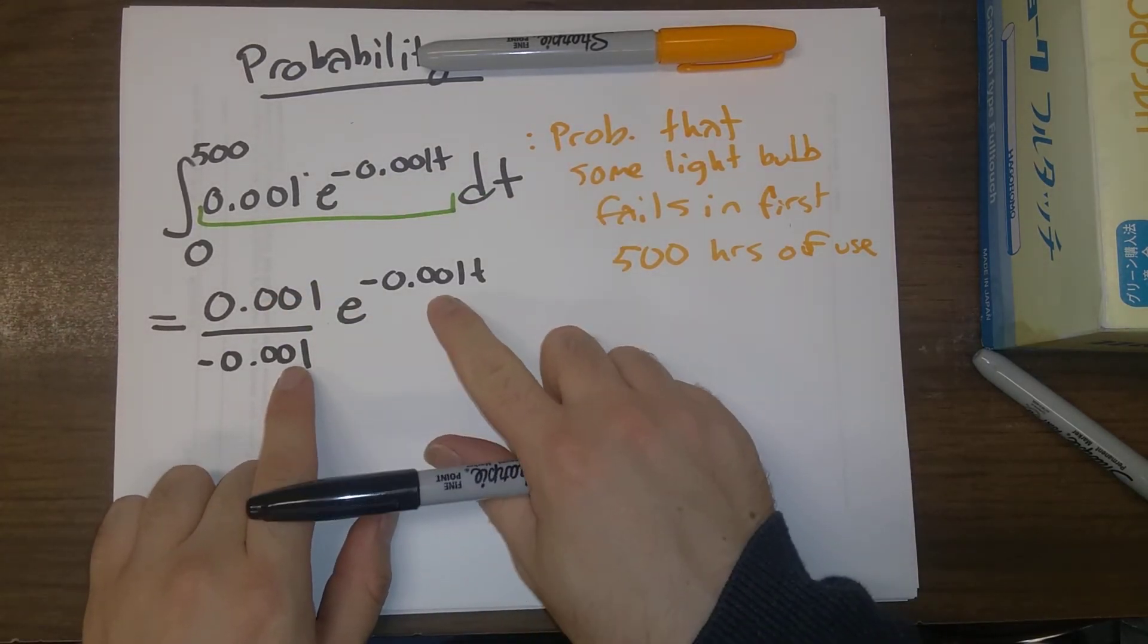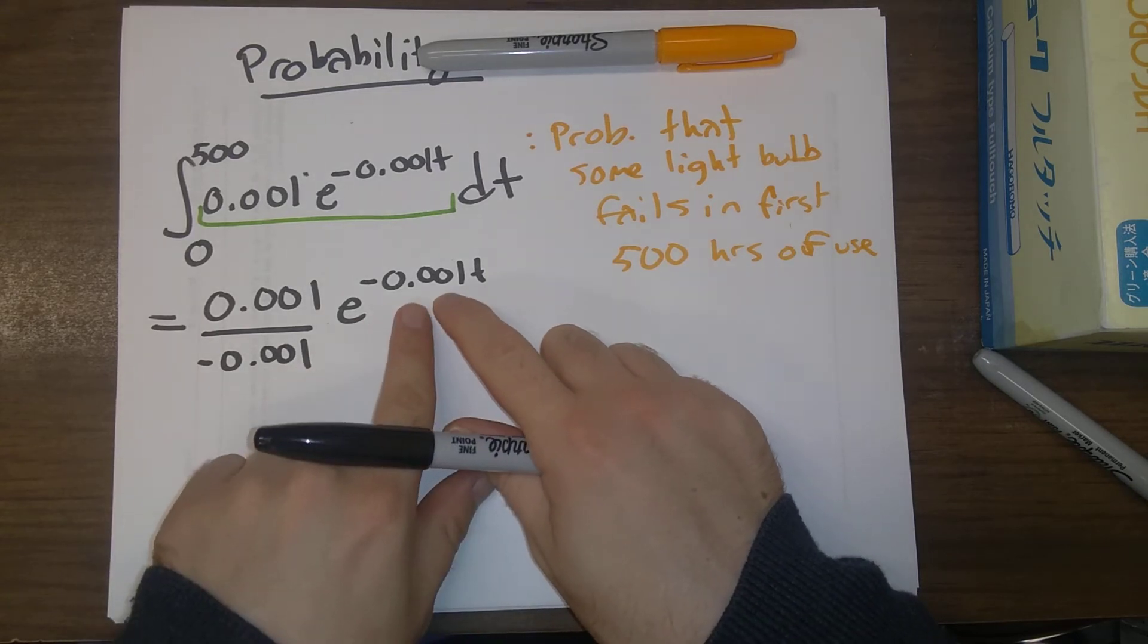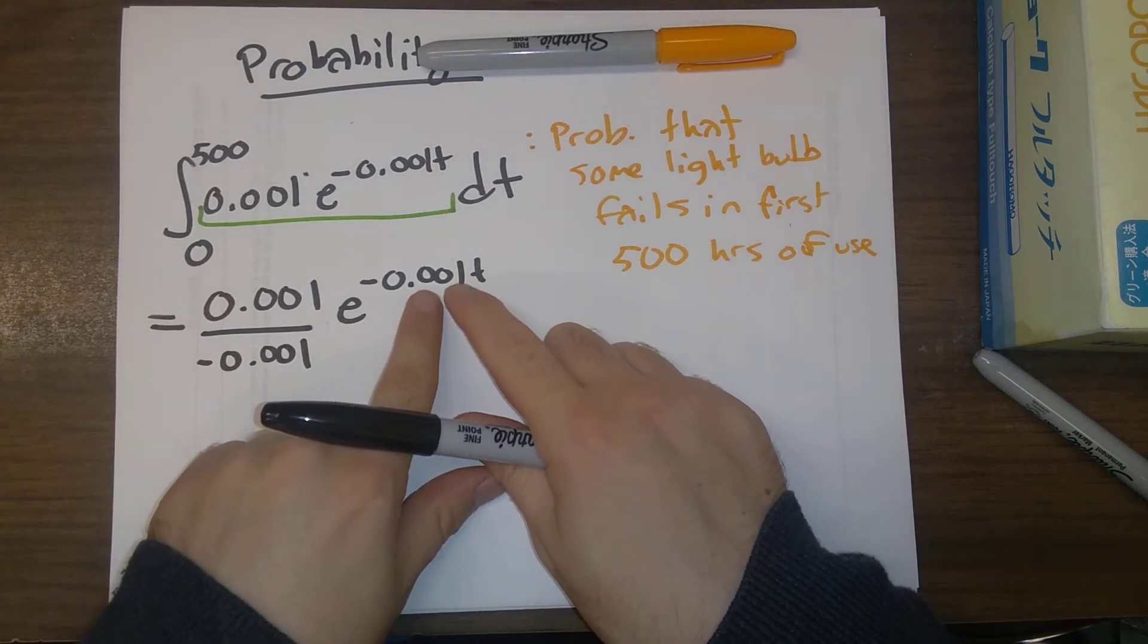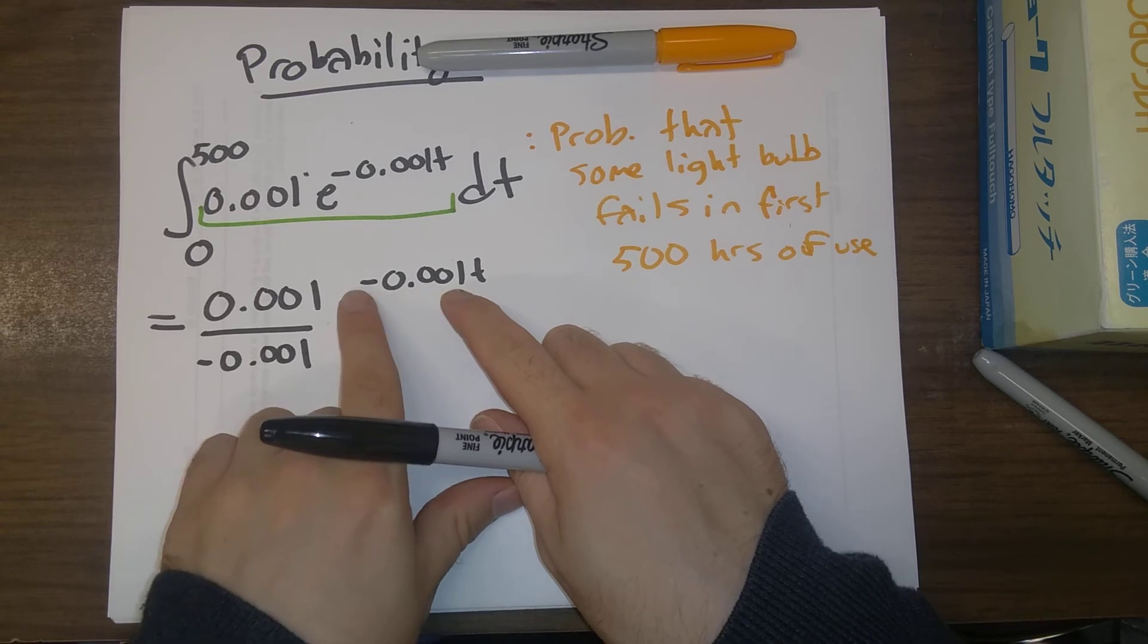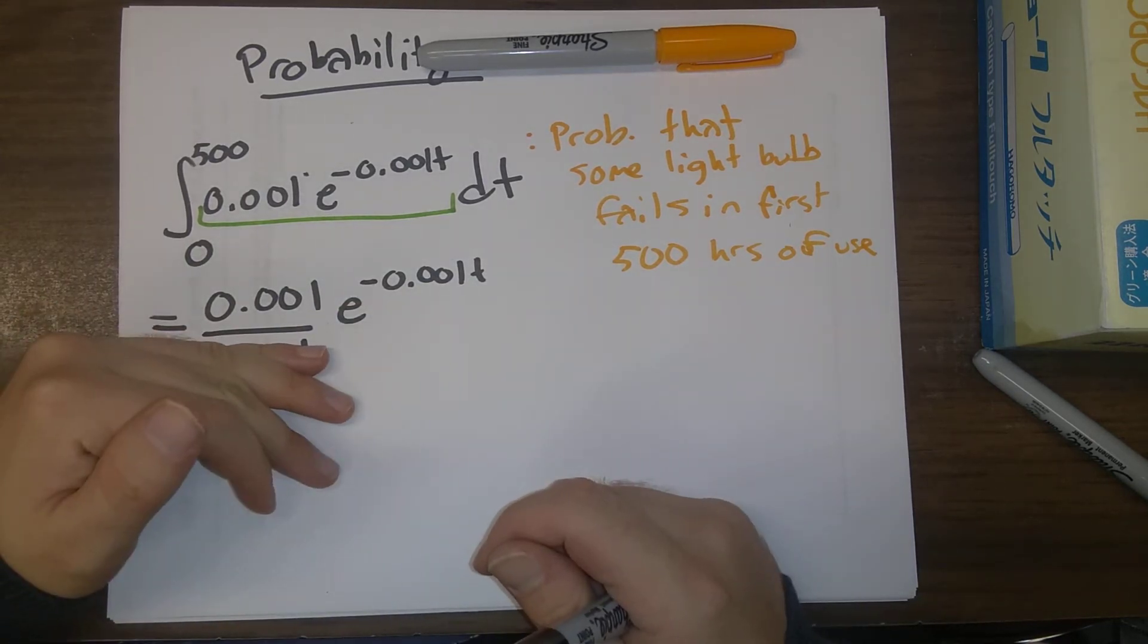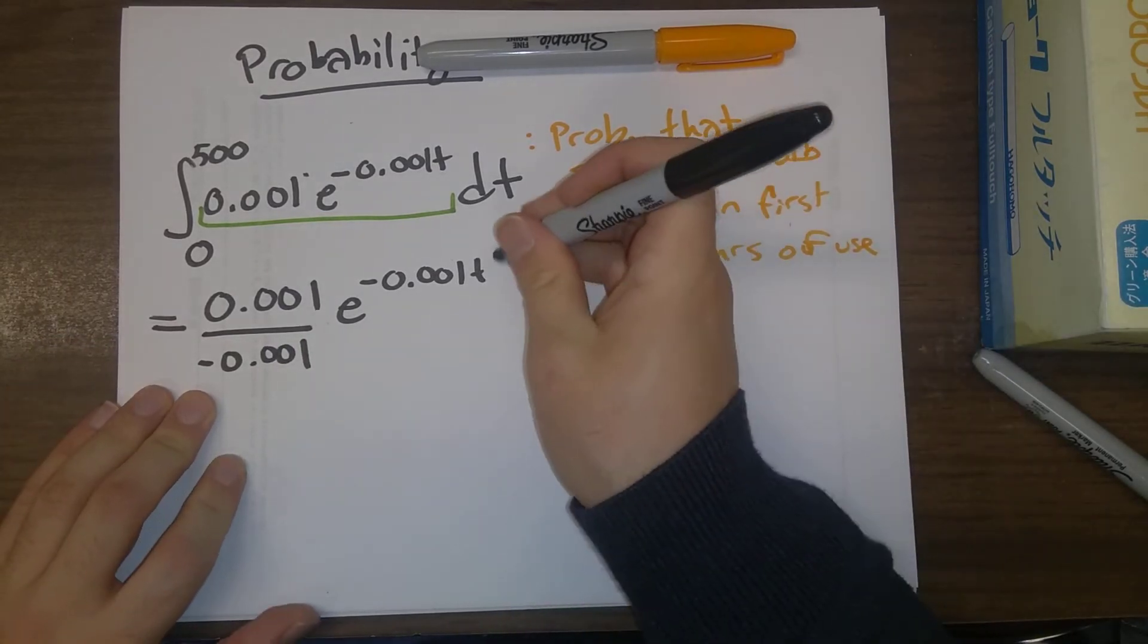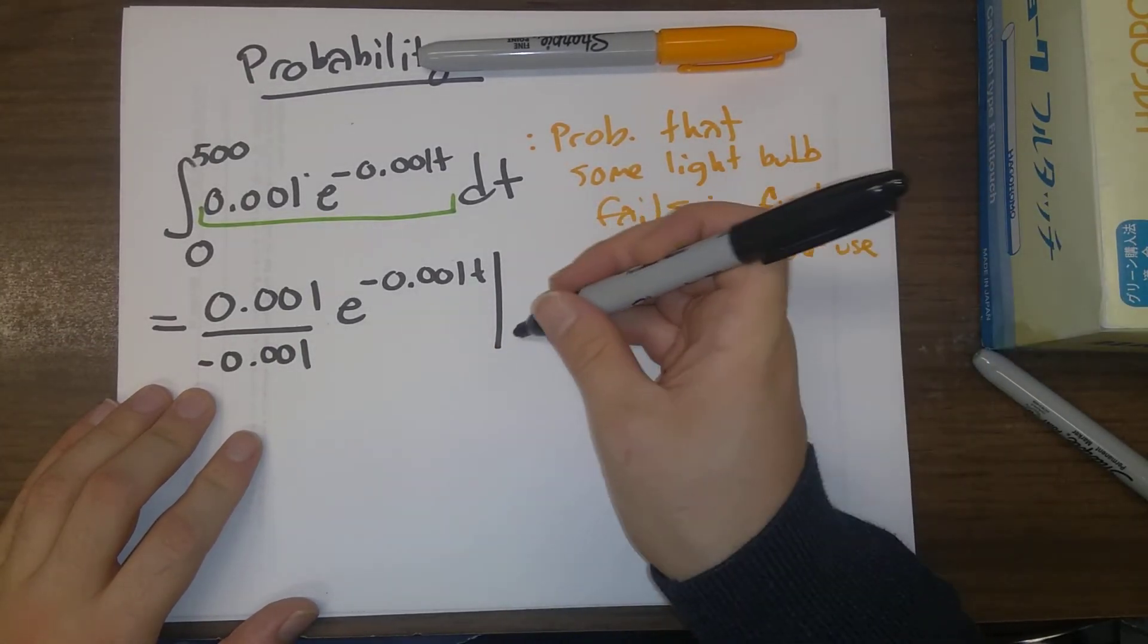We can see that this is the correct antiderivative, because when we take the derivative here, we multiply by negative 0.001, we get rid of this factor, and we're back to where we were. So this is the correct antiderivative.